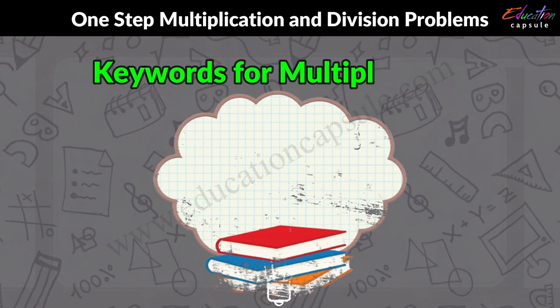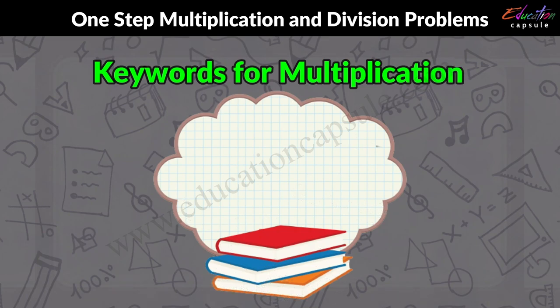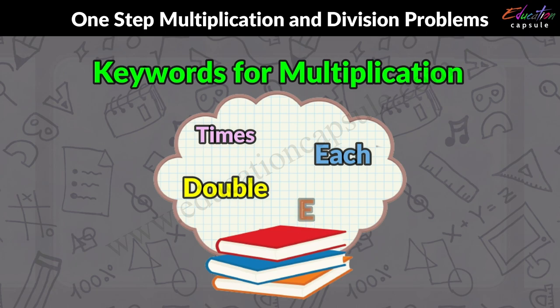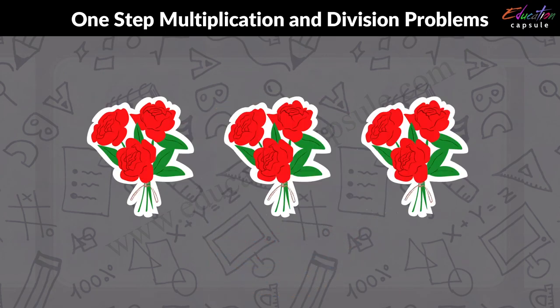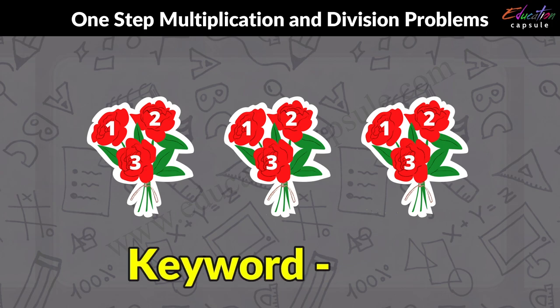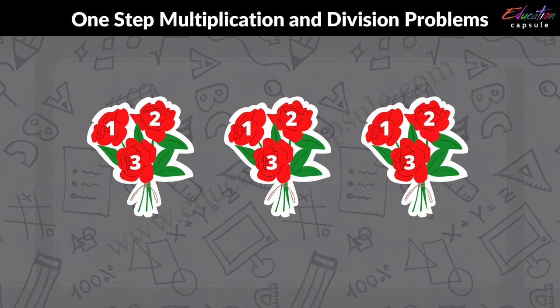Key words for multiplication are: times, each, double, every. Here is an example: Each bouquet has three flowers. How many flowers will there be in three bouquets? Here the key word is 'each,' so we know that we will do multiplication.